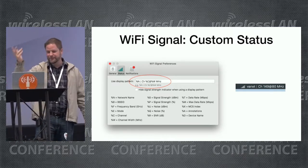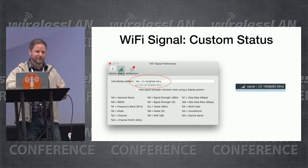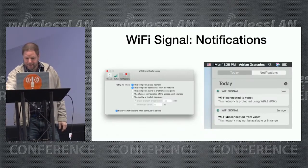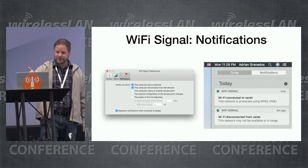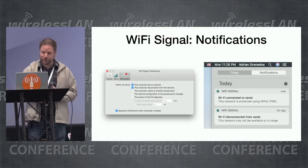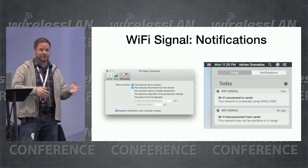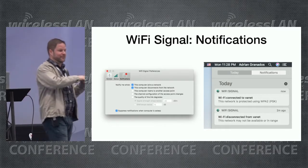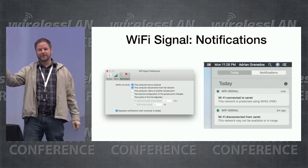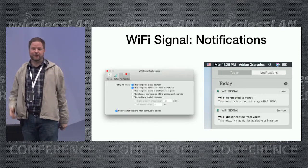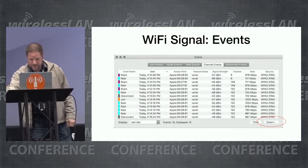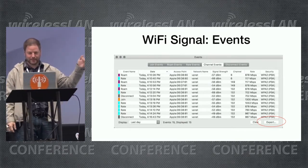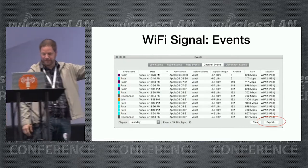You can hide the signal strength bars if you prefer just the Apple indicator, and it has notifications you can configure — notify you when you connect or disconnect from a network, and when you roam, so you get a notification saying you disconnected from one AP and connected to another. You can log those events and export them as text or CSV, showing a list of roaming events, disconnections, joins, rate changes, and signal strength.